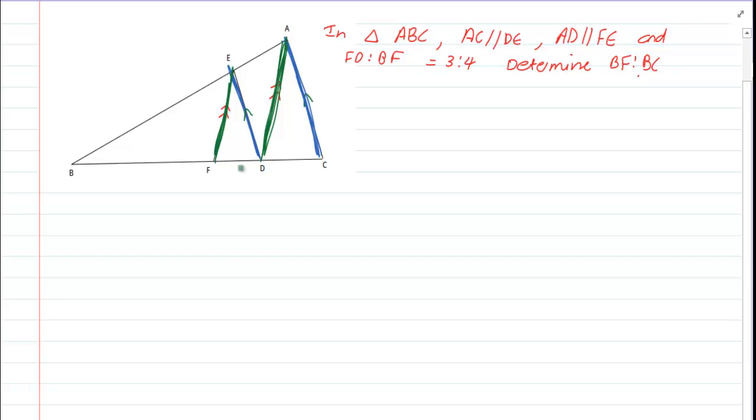Then they tell us that FD is 3 and BF is 4. Now immediately you should know. But this is a ratio. Now when you write a ratio, write an unknown. Because this would help you later when you have more ratios on the same drawing. Now what they are asking us is to find the ratio of BC to BF.